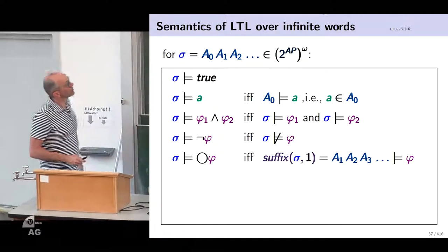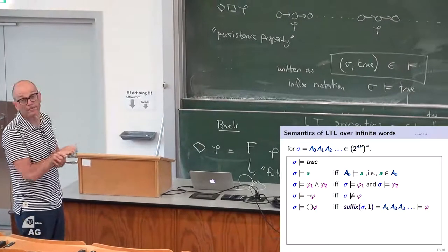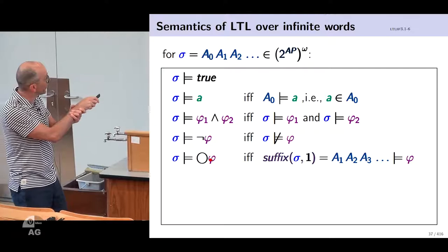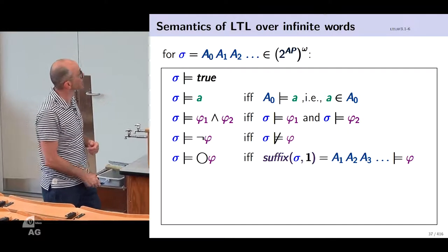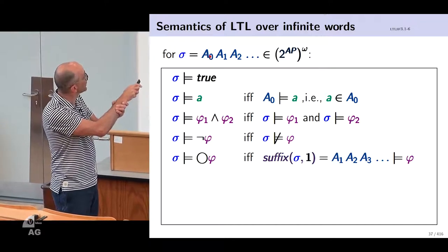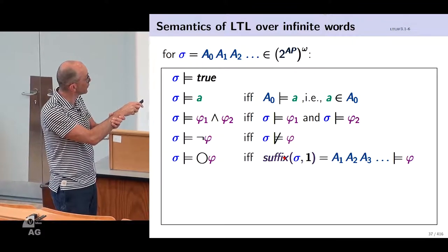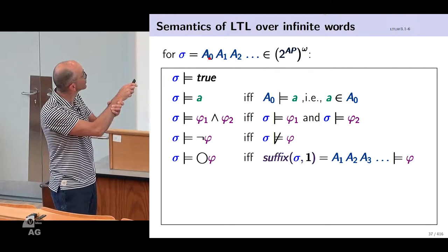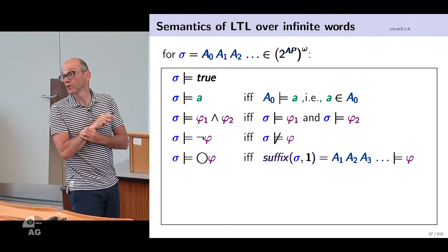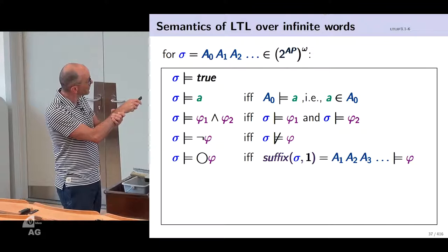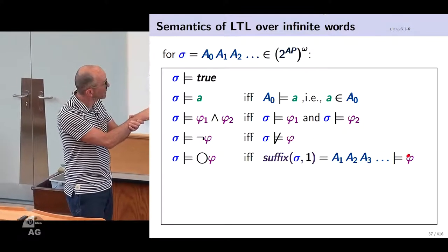For Next: sigma satisfies next-phi if and only if the suffix starting from position one — that is, a_1, a_2, a_3, ... — satisfies phi. So the 'next' operator is handled by stripping off the first element and requiring the remaining suffix to satisfy phi.